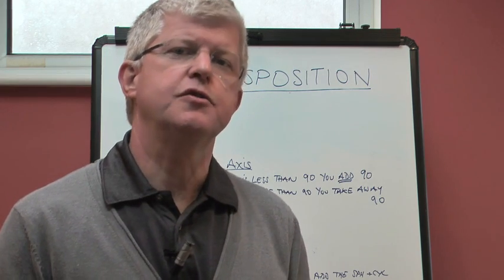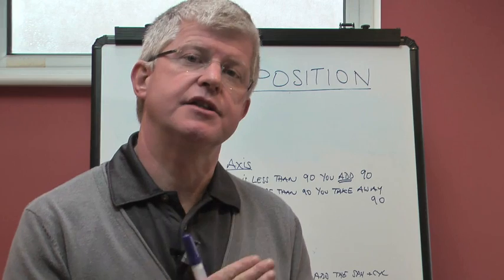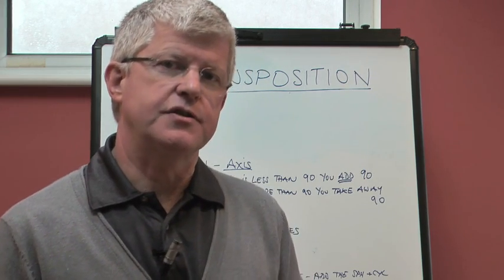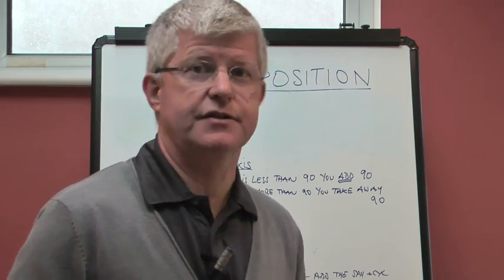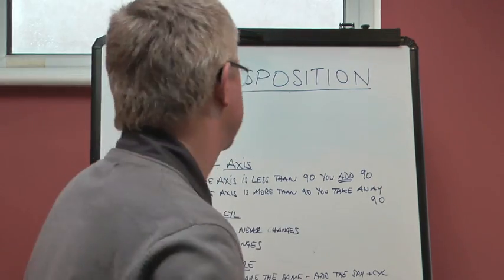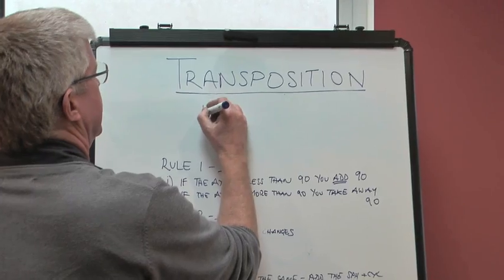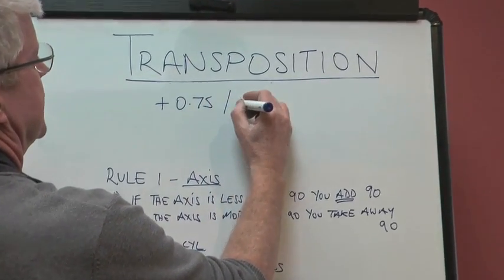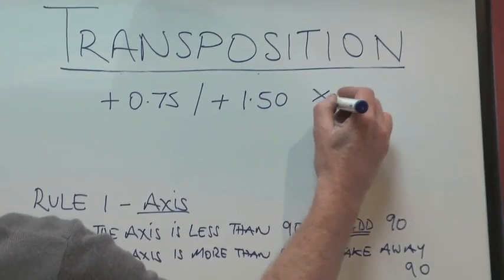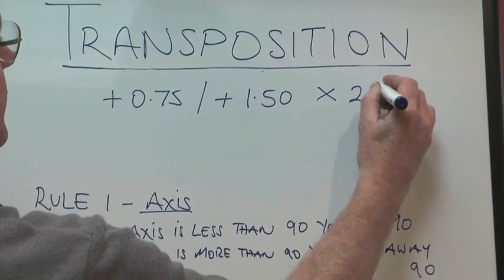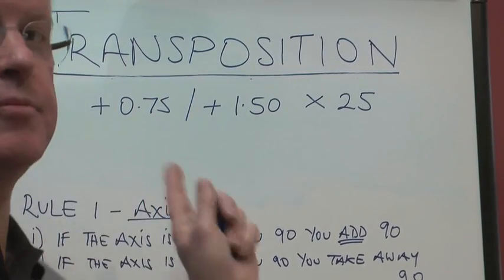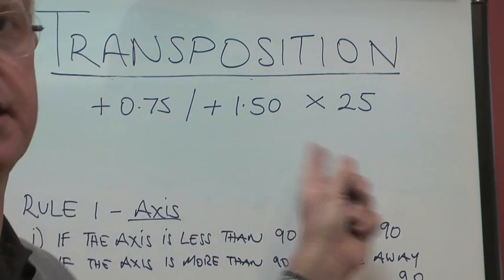So a toric lens has two powers that run at 90 degrees to each other, and there are two different ways of writing the same thing. So I'm going to give you an example. Let's say that we have a plus 0.75 plus 1.50 axis 25. So this is a prescription which is for a toric lens.